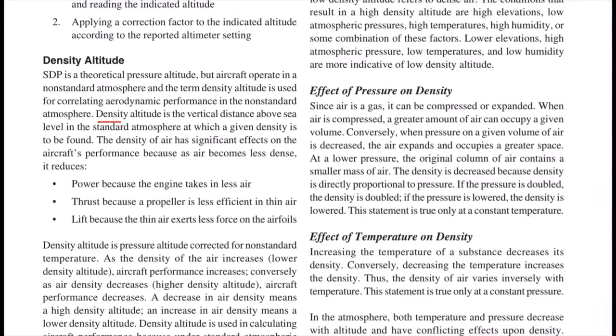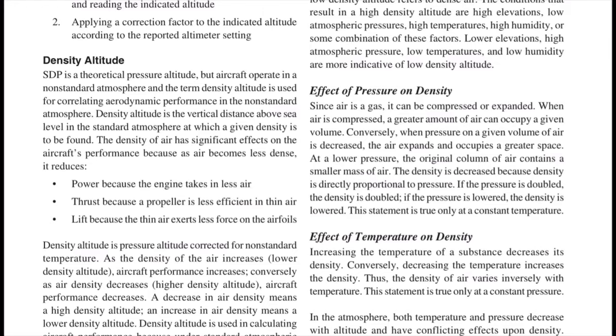So what is density altitude? According to the P-Hack, density altitude is the vertical distance above sea level in the standard atmosphere at which a given density is to be found. That's not helpful at all. Fortunately, the P-Hack also provides a more useful description: density altitude is pressure altitude corrected for non-standard temperature.